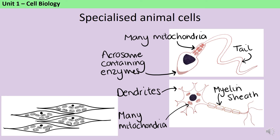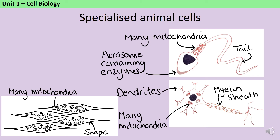Another example of a specialised animal cell is a muscle cell. Again, there are lots and lots of mitochondria, because a lot of energy is required in order for these muscle cells to continuously contract. Also, muscle cells have quite a long, thin shape, and this means that as they contract and then expand, they have room to expand into.